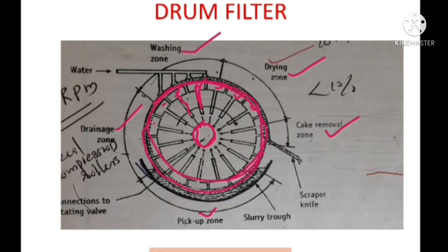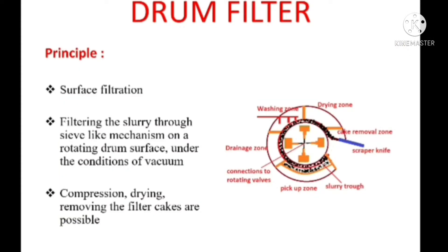Now we are going to discuss the principle of this drum filter. Our drum filter is dipped in a slurry reservoir. When we switch on the drum filter, vacuum starts to operate. The surface of the drum picks up some amount of slurry from the slurry reservoir on its surface. Then liquid from the slurry enters through the internal pipe and reaches the collecting tank present in the center of the drum filter.